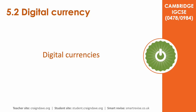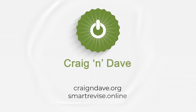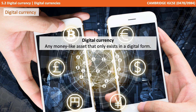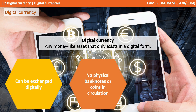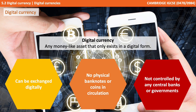In this video we discuss digital currencies. Digital currencies can be thought of as any money-like asset that only exists in a digital form. They can be exchanged digitally — no physical banknotes or coins are in circulation — and they're not controlled by any central banks or governments.